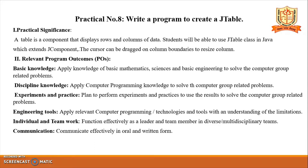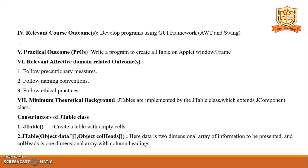Relevant program outcomes — these program outcomes are the same for all practicals: basic knowledge, discipline knowledge, experiments and practice, engineering tools, and individual and teamwork communication. Relevant course outcomes: develop programs using GUI frames. Follow precautionary measures, naming conventions, and ethical practices.